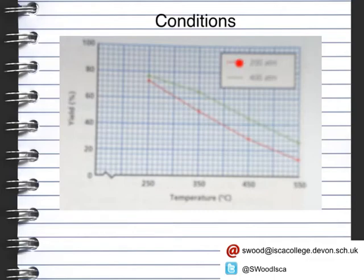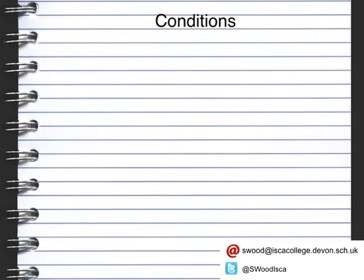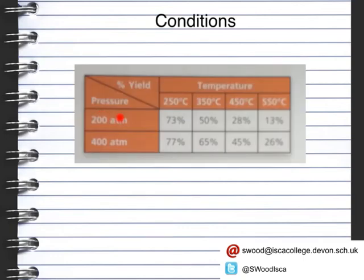The red line here shows the lower pressure at 200 atmospheres, and the other line shows 400 atmospheres. When we increase the pressure, we get a higher yield. At 400 atmospheres we get a higher yield than at 200 atmospheres. Here we have the actual data graph showing pressure at 200 and 400 atmospheres against yield percentage at different temperatures — all lines decrease with temperature, but at 400 atmospheres we get a bigger yield than at 200 atmospheres.